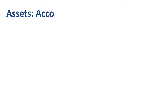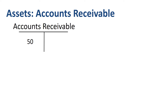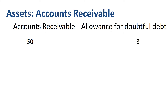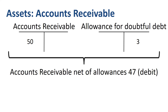The second example of a CONTRA asset account is accounts receivable. 50 of outstanding accounts receivable — invoices sent to customers that the customers have not paid yet — minus an estimated allowance for doubtful debt of 3, an estimate of the amount that is uncollectable, gets you to accounts receivable net of allowances of 47. For the allowance for doubtful debt, the CONTRA account has a credit balance of 3, and the offset to the journal entry was a debit in bad debt expense in the income statement of 3.